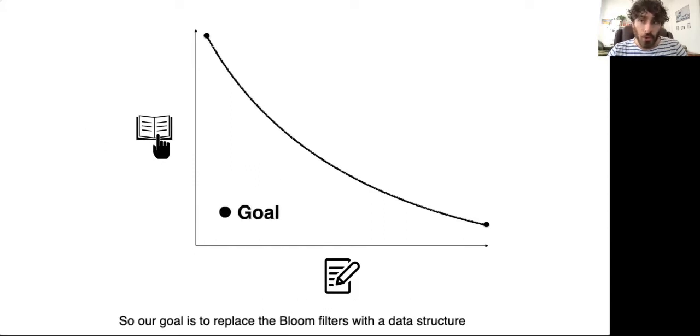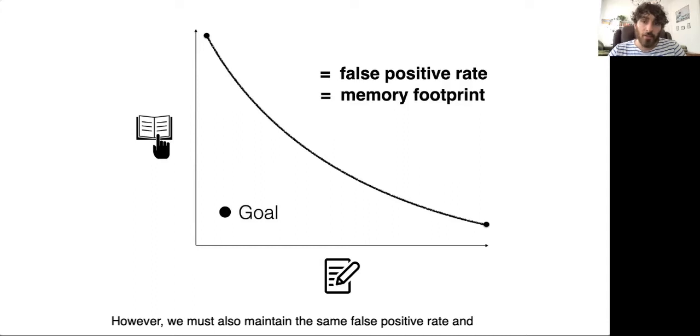Our goal is to replace the Bloom filters with a data structure that achieves better memory access costs than the Bloom filters. However, we must also maintain the same false positive rate and memory footprint as the Bloom filters so as not to become worse on other fronts.